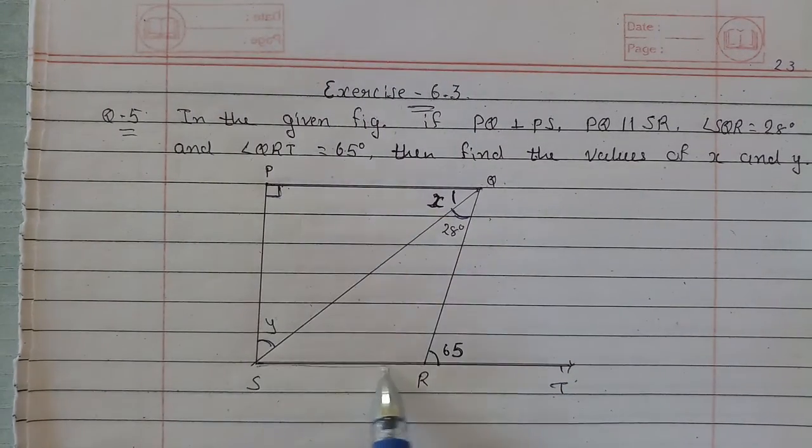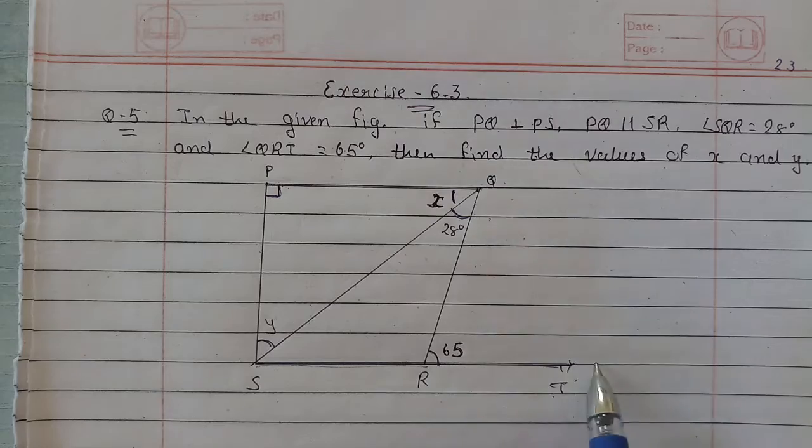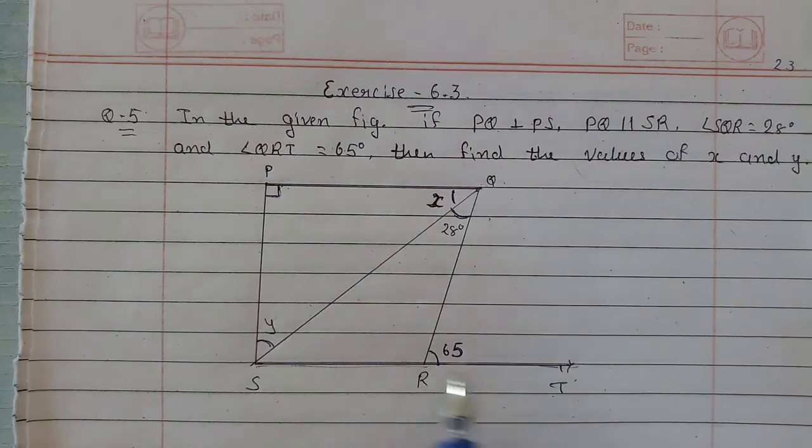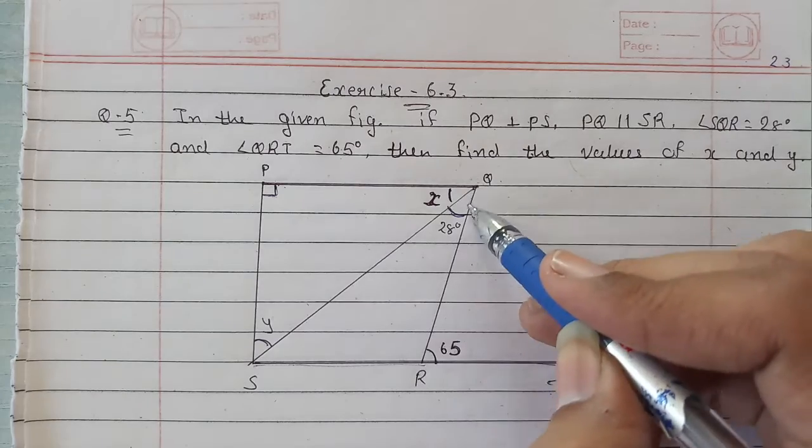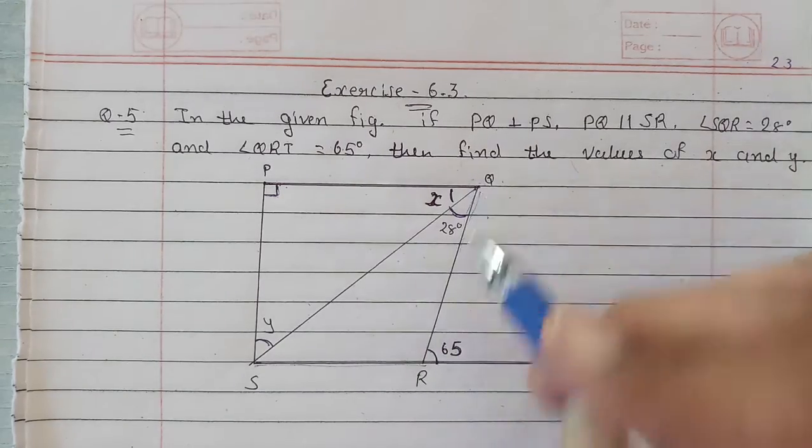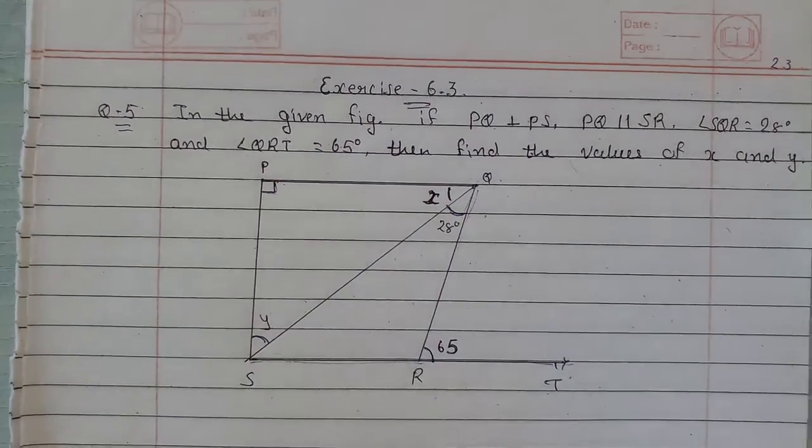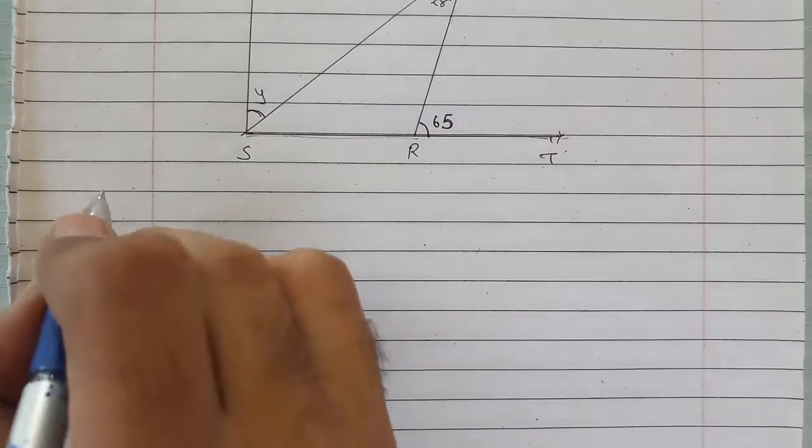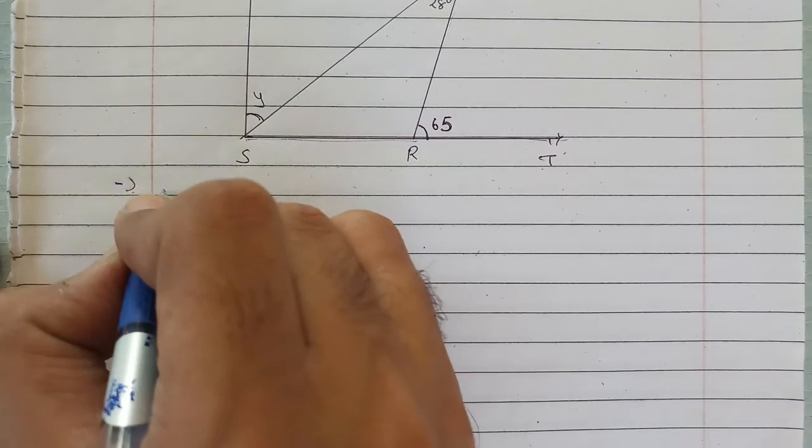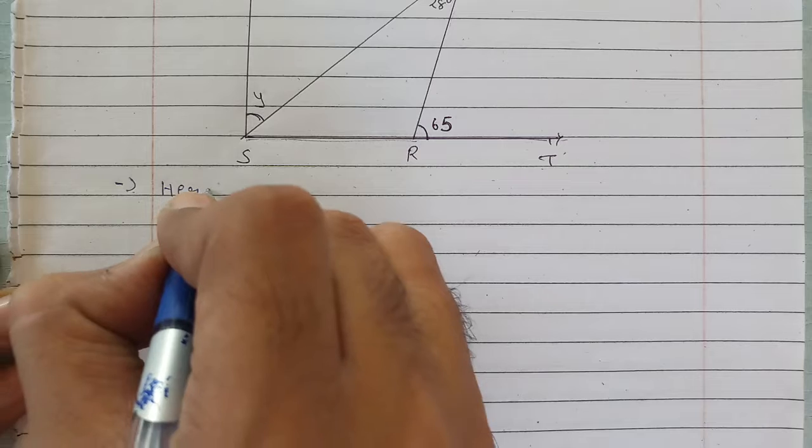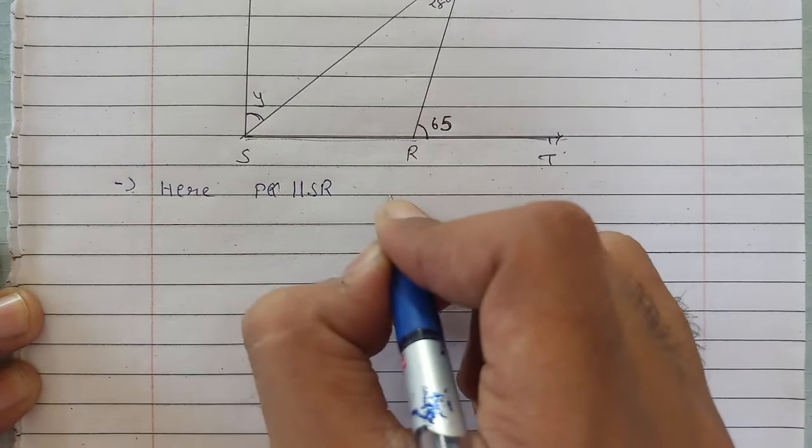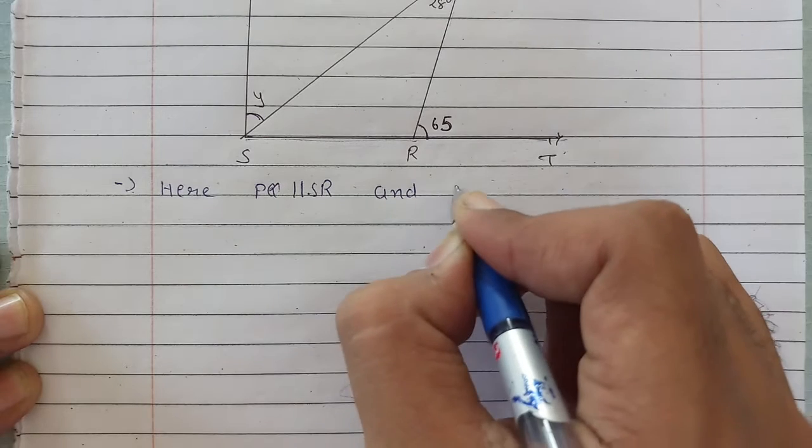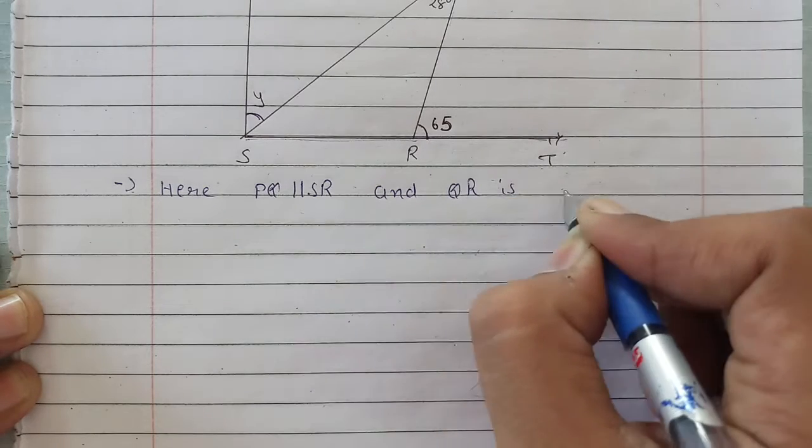Let's start solving it. First of all, SR, that means ST, this whole line is parallel to PQ, and QR which is the transversal will meet it. So let's write that down: PQ is parallel to SR and QR is the transversal.